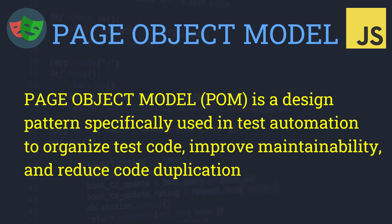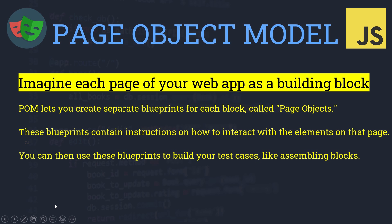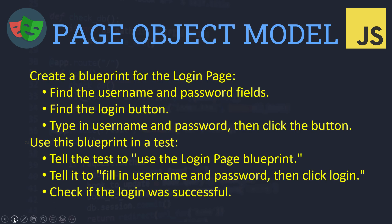It will improve the maintainability of the code and it will reduce code duplication as well. Now let's learn more about the Page Object Model. Imagine the web page as a building block — the Page Object Model lets you create a separate blueprint for each block, and those blocks are known as page objects. These blueprints contain instructions on how to interact with the elements on that page.